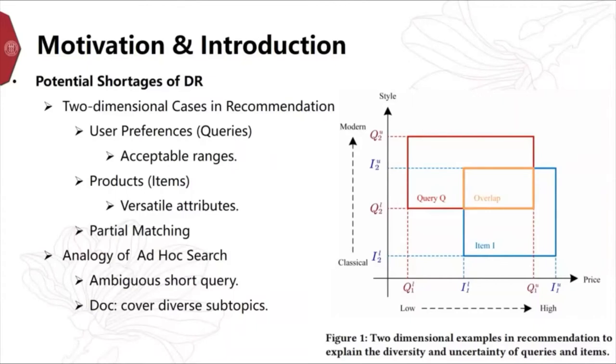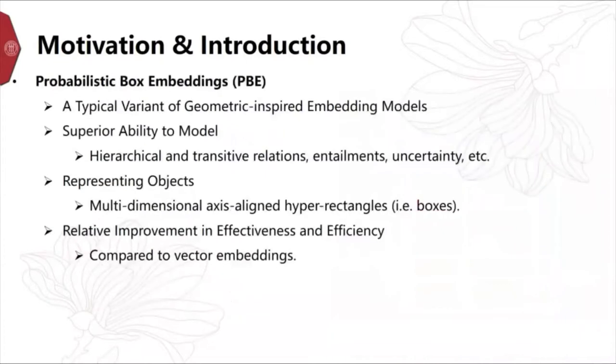It is hard to model semantic diversity and uncertainty of queries and items with a single point in the vector space. Recently, probability box embeddings, a typical variant of geometric-inspired embedding models, are proposed. It demonstrates the ability to model hierarchical and transitive relations, entailment and uncertainty. It represents objects as multi-dimensional axis-aligned hyperrectangles.